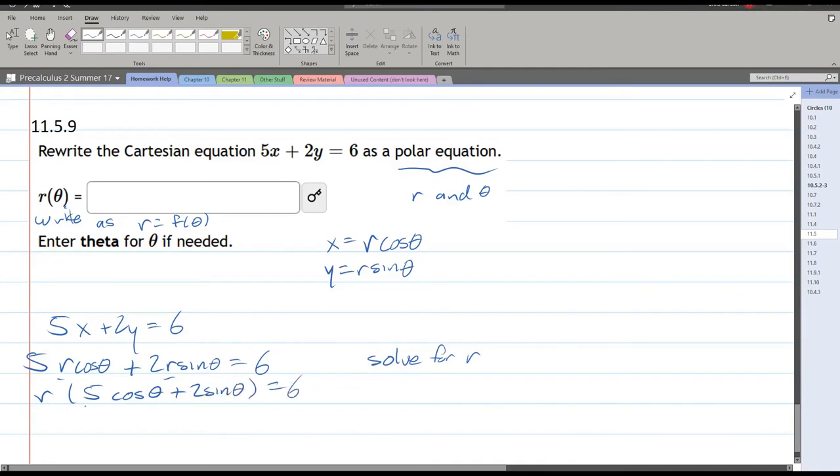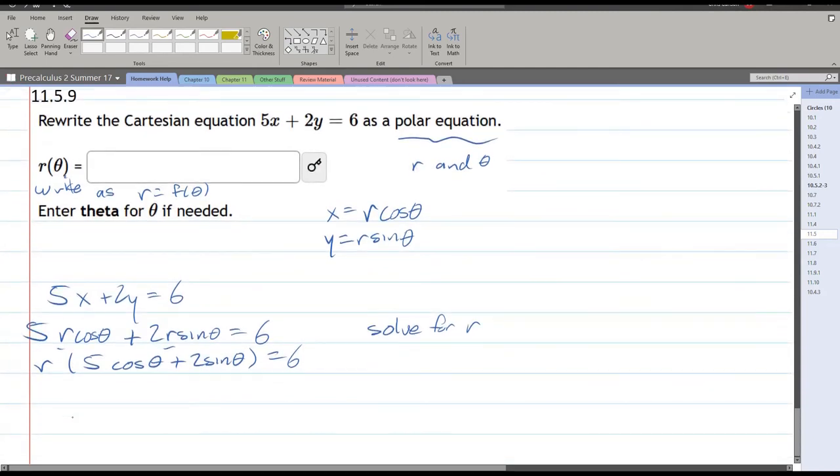And we're almost done. Just get all this stuff to the other side, so we're going to divide both sides by that. So it's 6 divided by 5 cos theta plus 2 sine theta.